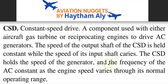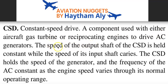The frequency of the AC generator is kept constant as the engine speed varies through its normal operating range. The Constant Speed Drive is a major component of the IDG — Integrated Drive Generator — and is always installed on the accessory gearbox of the gas turbine or reciprocating engine. The speed of the output shaft is held constant going to the AC generator, while the input shaft speed varies because it is connected to the engine.